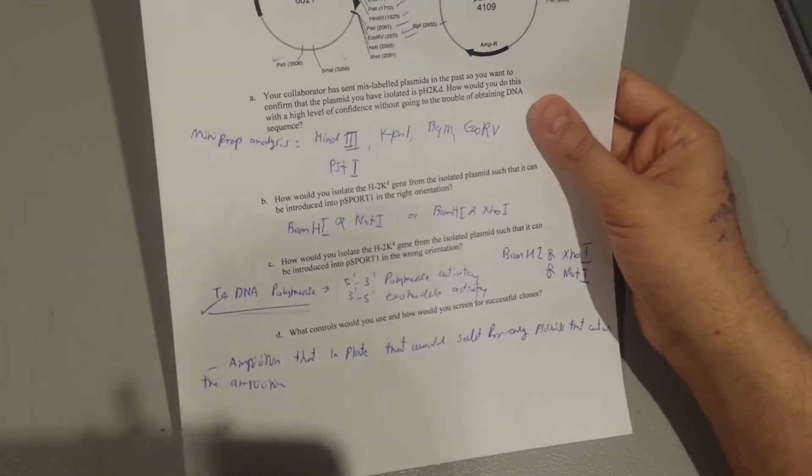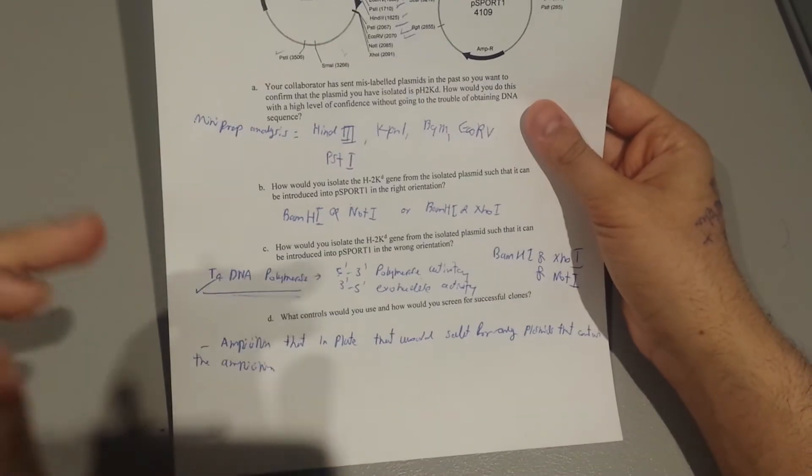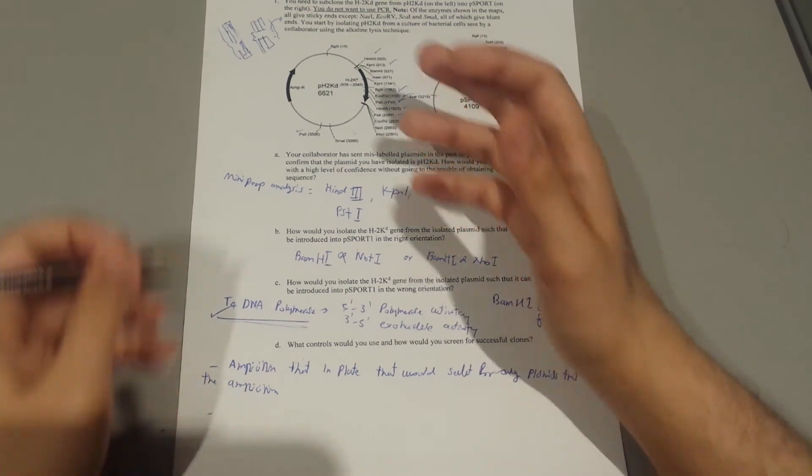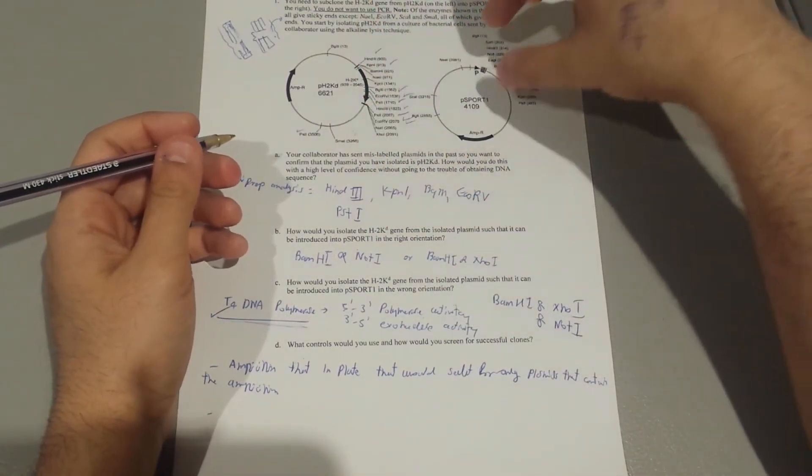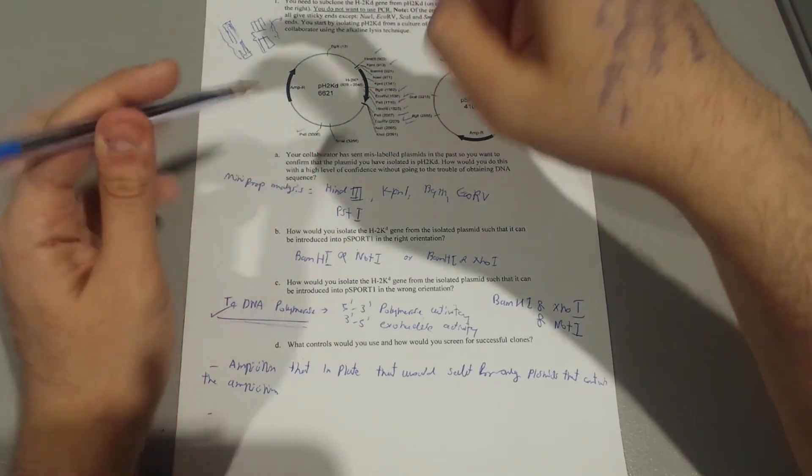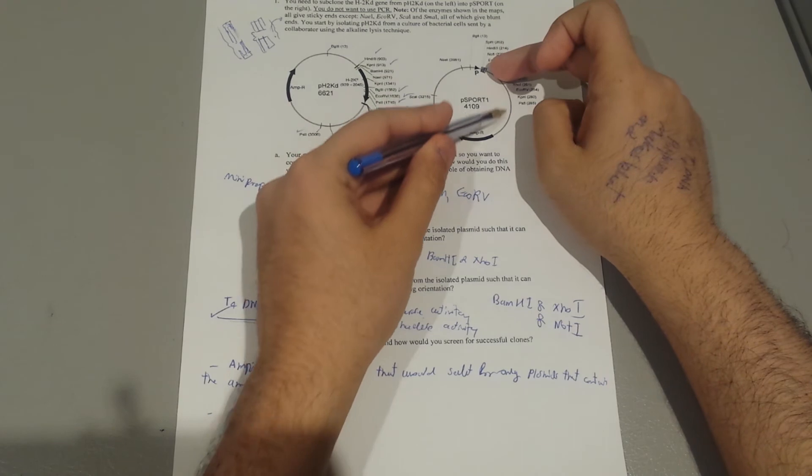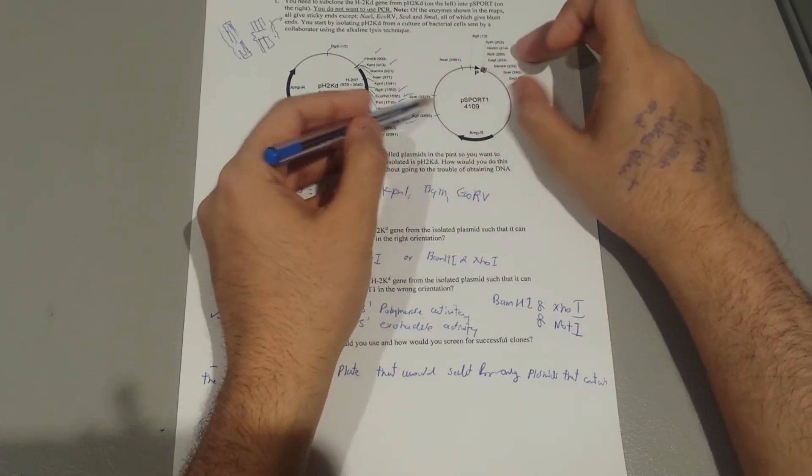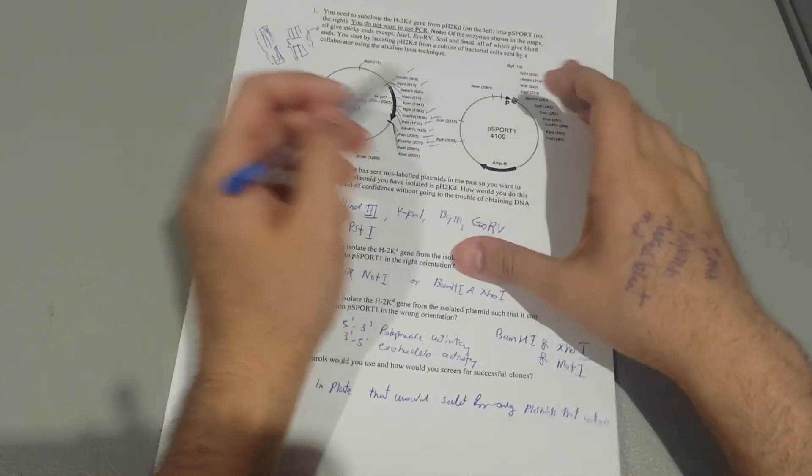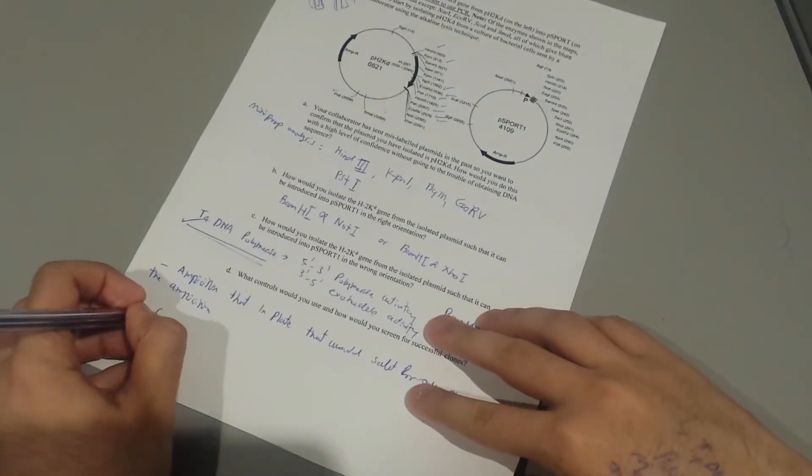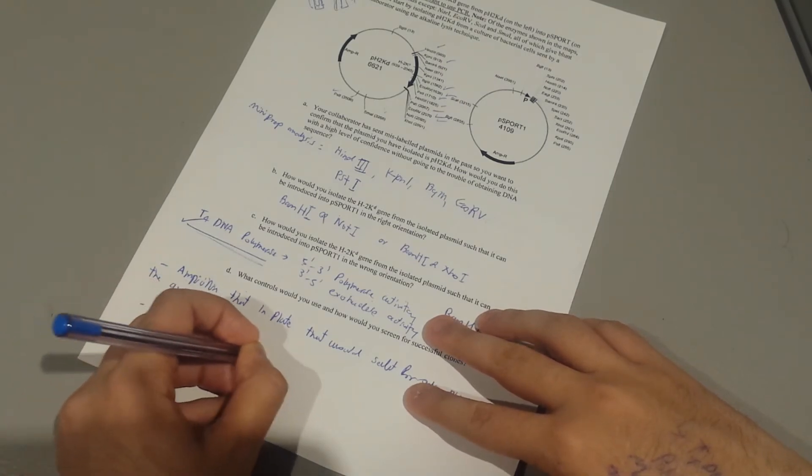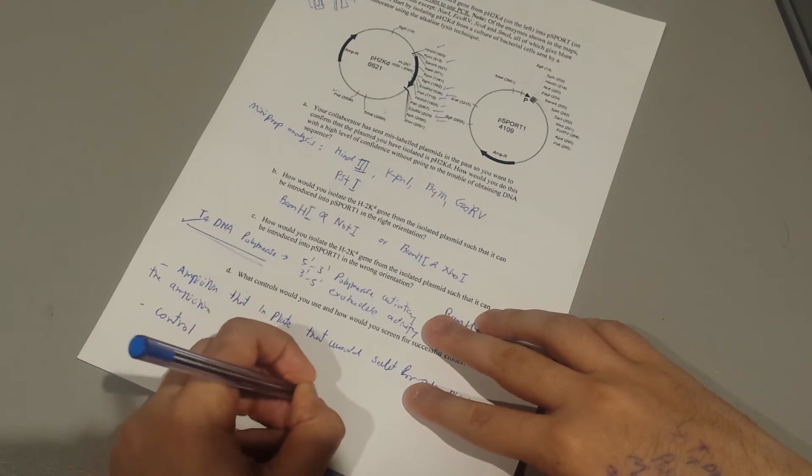That would select for only plasmids like this that contain the ampicillin resistance gene. Or you could also, for example, there's one important control. While you're doing the ligation, while you already have this plasmid being opened with the same enzyme, this time you're not going to add this gene inside. So there is a control we call it as a background.